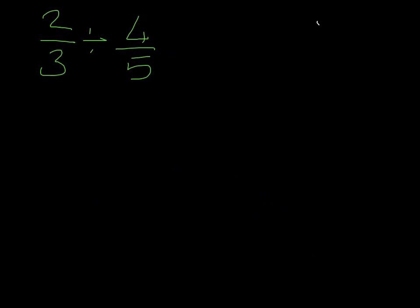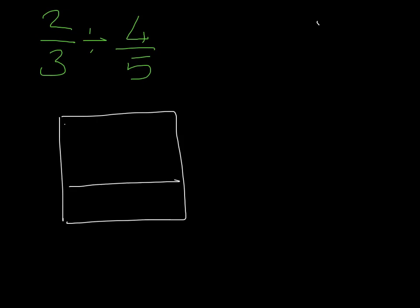So let's look at our first fraction: 2 over 3 divided by 4 over 5. Right away, you should be able to start drawing out this fraction. My building would have a total of 3 floors, and each floor would have 5 rooms.